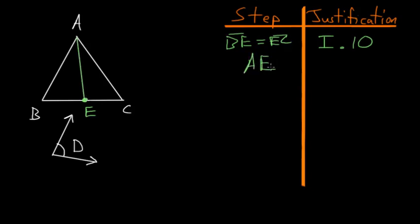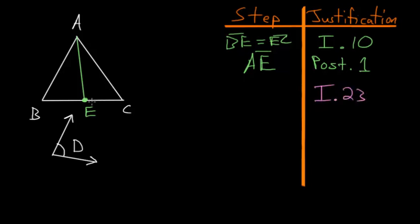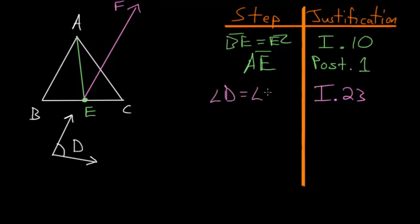Now let's connect points A and E with a line, using Postulate 1. From point E, we want to construct an angle equal to angle D. We can do this because of Book 1, Proposition 23. So let's duplicate angle D here and create a line going up — we'll call this line EF — so angle D is now equal to angle FEC.